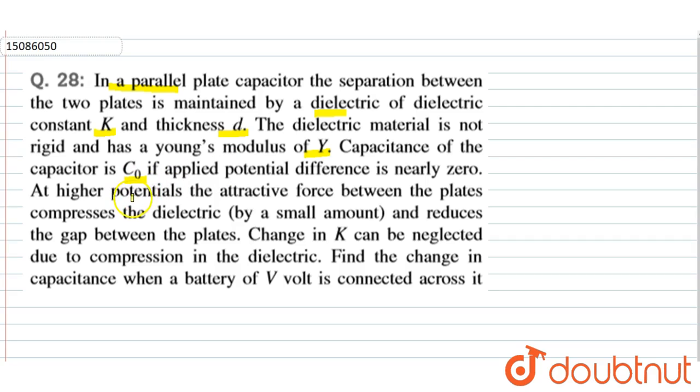At higher potential, the attractive force between the plates compresses the dielectric by a small amount and reduces the gap between the plates. We are asked the change in capacitance when the battery of V volt is connected across it. We have to assume the change in K, the dielectric constant, can be neglected due to compression in the dielectric.